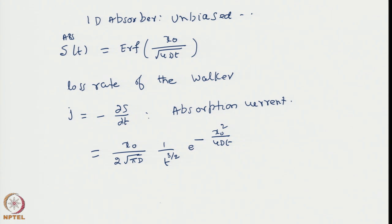Interestingly, this function clearly shows that the current is 0 at t = 0: J = 0 when t = 0. Because when t = 0, e^(−x₀²/4Dt) becomes e^(−∞), which tends to 0 much faster than t^(3/2). Although it is a 0/0 form, this zero goes much faster, so eventually J becomes 0.